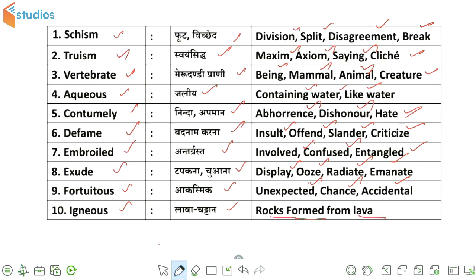तो guys, आपने देखा यहाँ पर किस तरीके से total ten words हैं, जिनके synonyms हमने आपके लिए यहाँ present किए. कम से कम एक word में तीन synonyms तो हैं ही, कुछ के चार-चार भी synonyms हैं. तो यह single slide आपको total around 40 से लेकर 45 words तक learn कराता है इस नन्हे से session में. आपका कम से कम टाइम में जादा से जादा content मिलता है इस particular session में.